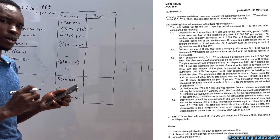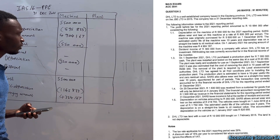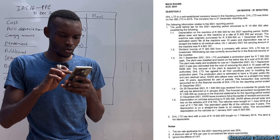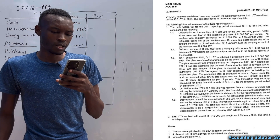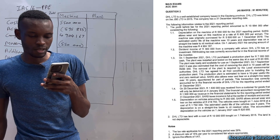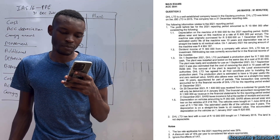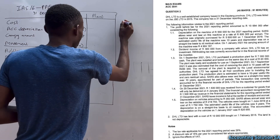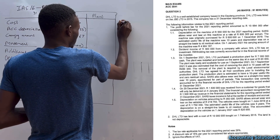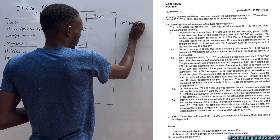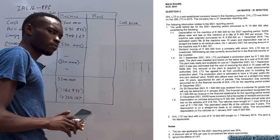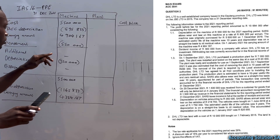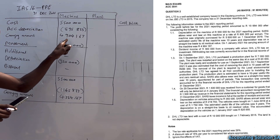Now let's move to the tricky one — the plant — because it has a lot of information. On 1 September 2021, DHL Ltd purchased a plant for 7,000,000. We need to calculate the cost price first. Note: if you are not given the carrying value at the beginning, you would go back to the original purchase year and calculate depreciation to get the accumulated depreciation.